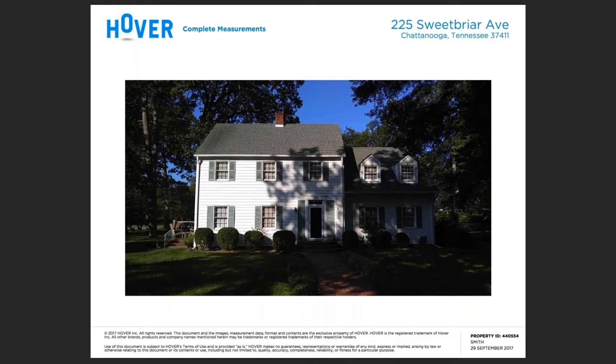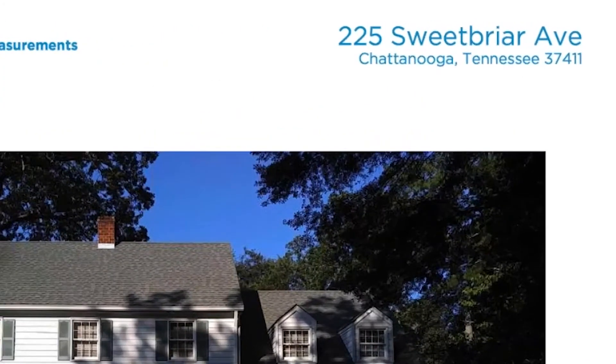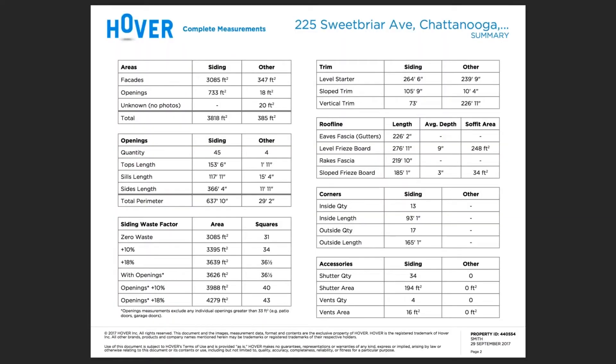Let's take a closer look at the measurement PDF of a complete order. We start off with a cover page where in the top right-hand corner you'll find the address of the property, and in the lower right-hand corner you'll find the property identification number. In the siding summary page, you'll find all the relevant information with regards to the side wall. When I was using Hover to put together a material list for a siding project, I'd spend the majority of my time on this page.